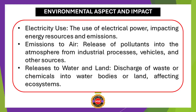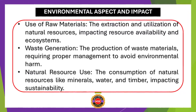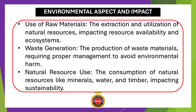Number five: emissions to air — release of pollutants into the atmosphere from industrial processes, vehicles, and other sources. Number six: releases to water and land — discharge of waste or chemicals into water bodies or land, affecting ecosystems. Number seven: use of raw materials — the extraction and utilization of natural resources, impacting resource availability and ecosystems. Number eight: waste generation — the production of waste materials requiring proper management to avoid environmental harm. Number nine: use of natural resources — the consumption of natural resources like minerals, water, and timber, impacting sustainability.